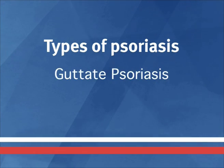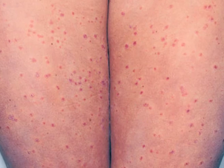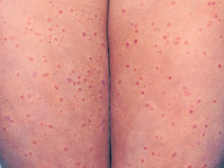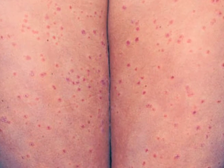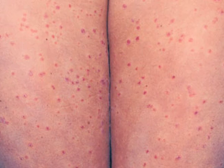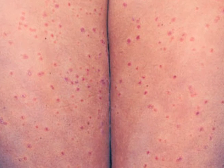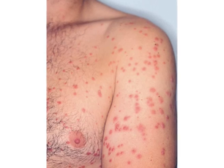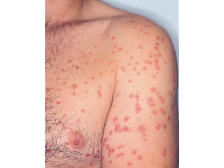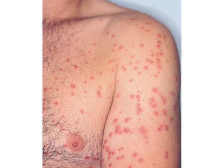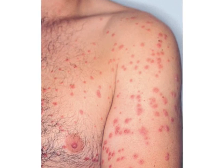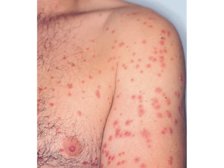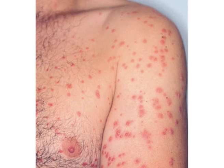Guttate psoriasis. This type of psoriasis is characterized by small, raindrop-like areas of dry red plaques, usually on the trunk and limbs. This form mostly occurs in adolescents or young adults and may follow a streptococcal throat infection. It usually occurs as a single episode which is temporary.